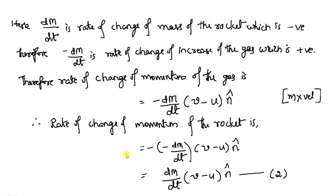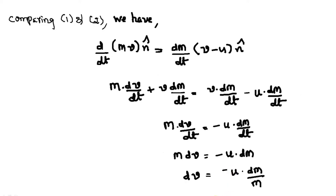As per equation one, the rate of change of momentum of the rocket is d/dt(MV·N̂), and as per equation two it is (dm/dt)·(V − U)·N̂. Both are equal, so comparing equations one and two: d/dt(MV) = (dm/dt)·(V − U). Expanding the left-hand side: M·(dV/dt) + V·(dm/dt) = V·(dm/dt) − U·(dm/dt). N̂ cancels throughout. Rearranging and cancelling V·(dm/dt) on both sides, we are left with M·(dV/dt) = −U·(dm/dt).